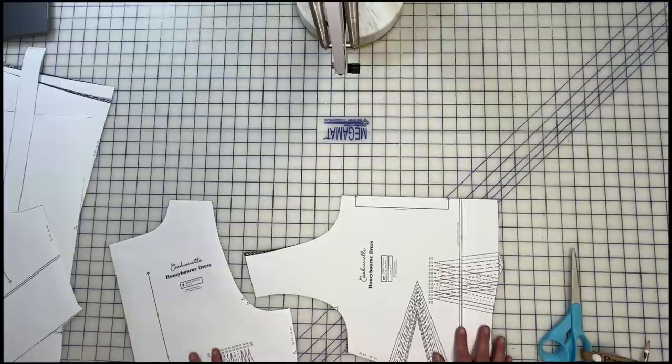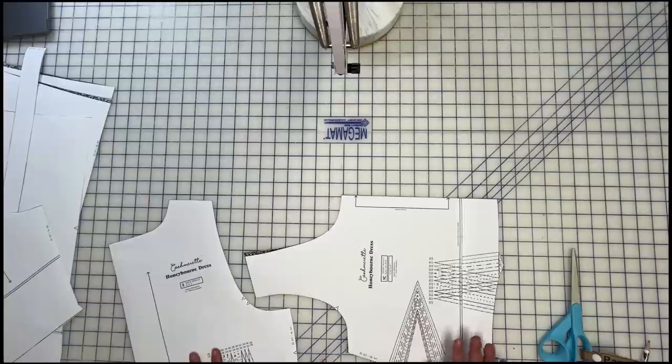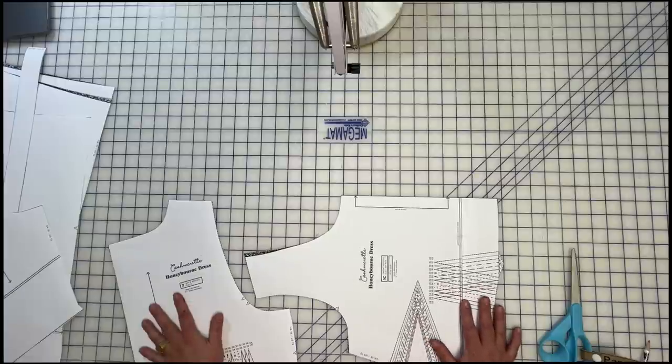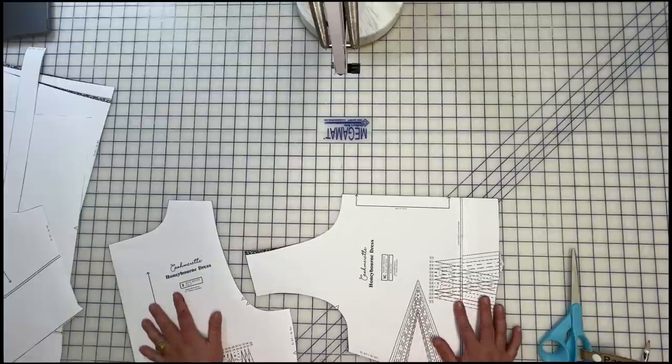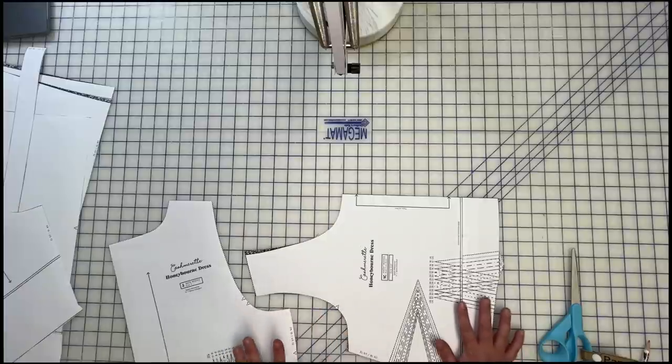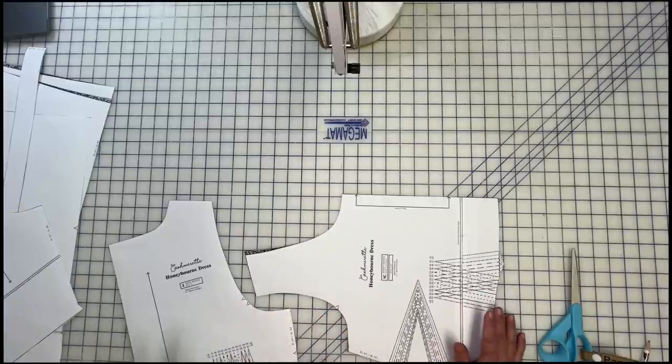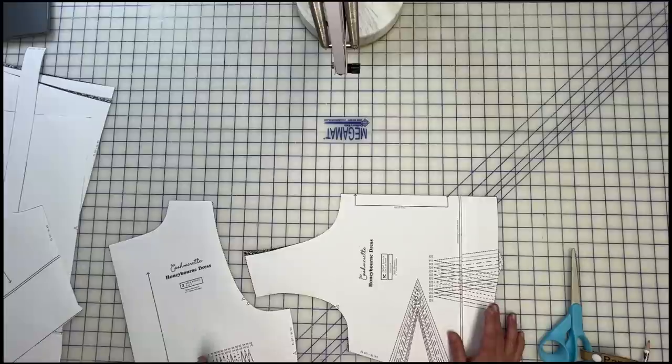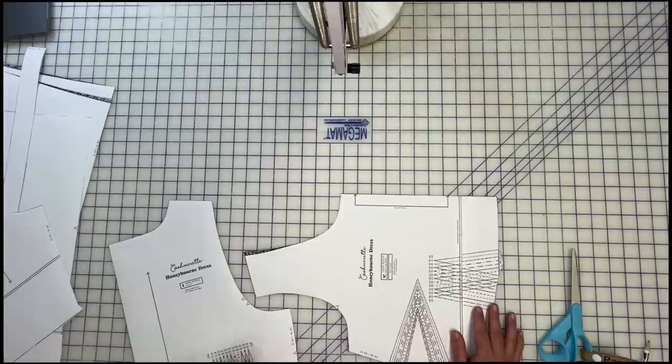Or you can just line the bodice of the dress. So that would consist of cutting out the front and the back in lining, as well as in fashion fabric, and then finishing off the neck edge with a lining or with a facing. They're kind of the same thing. It's just the lining obviously gets tacked down, folded under and tacked down at the waist. Whereas a facing, my preference is to topstitch around the whole outside edge.